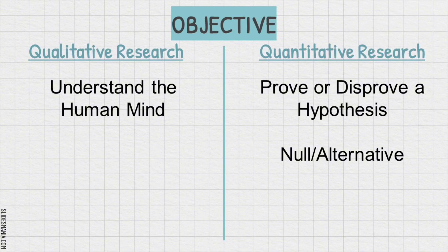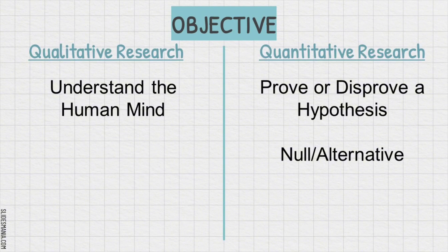Therefore, qualitative research aims to explore and understand phenomena in depth. Its objective is to gain detailed insights into people's experiences, behaviors, or social context. The focus is on understanding how and why something happens, rather than measuring or quantifying it. Researchers using qualitative methods seek to develop a deep, contextual understanding through interviews, observations, and narratives. Quantitative research, on the other hand, focuses on measuring and quantifying variables. The objective is to identify relationships or cause-and-effect links between variables using numerical data. It seeks to test hypotheses or theories and generalize results across larger populations.